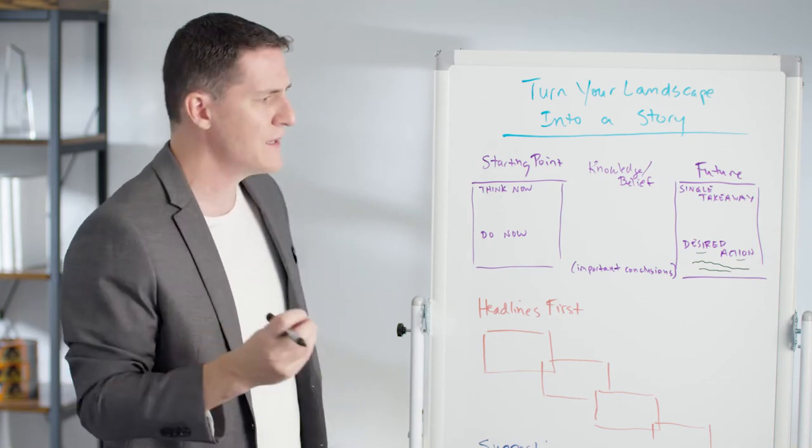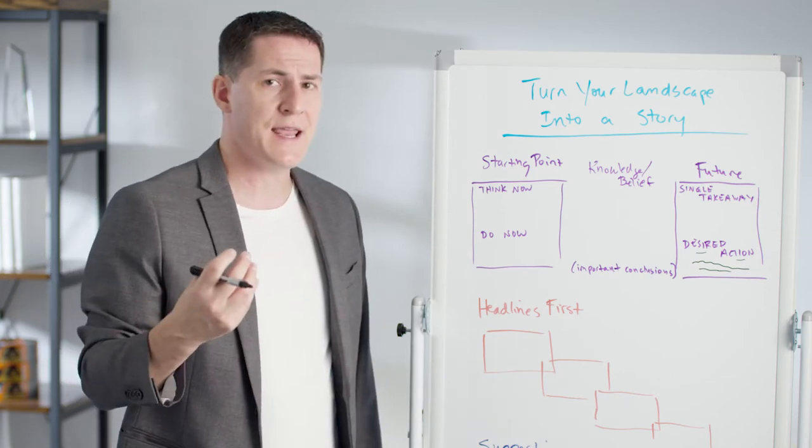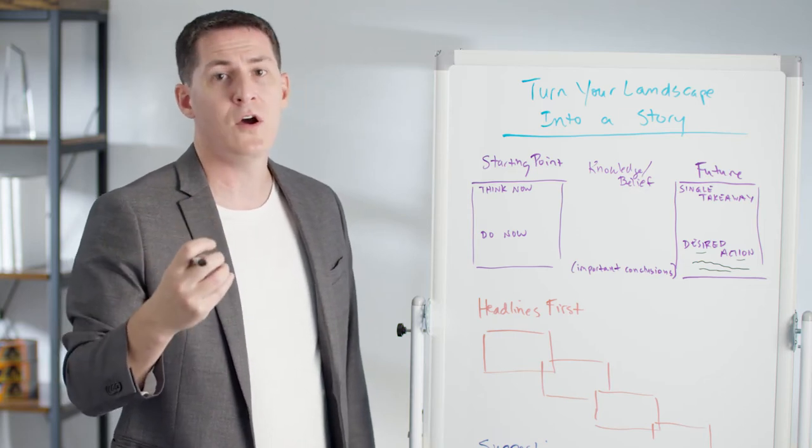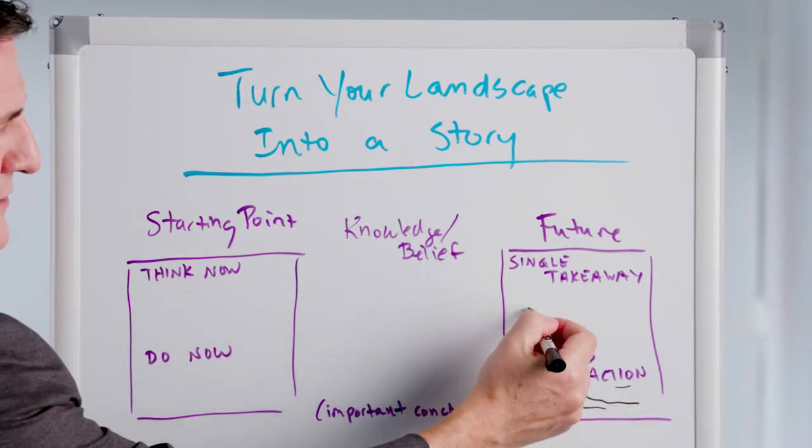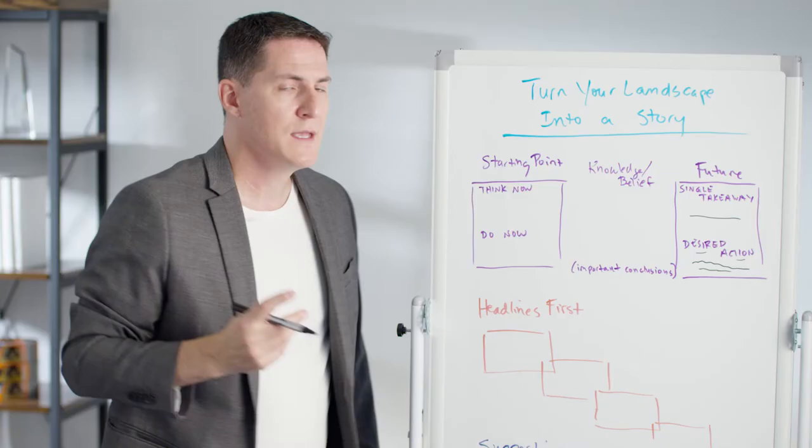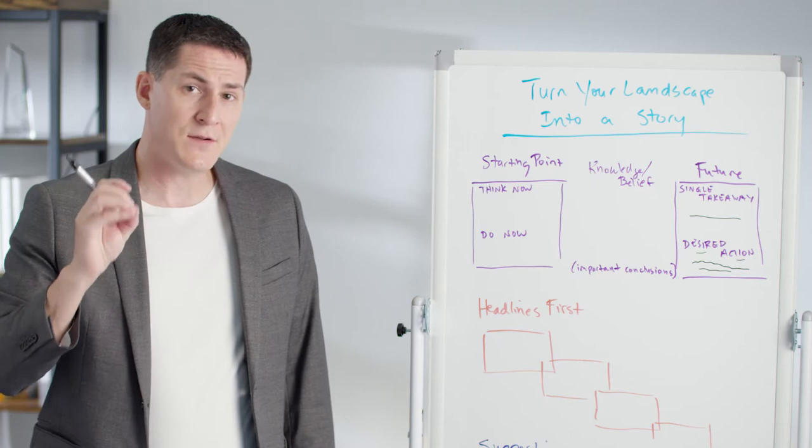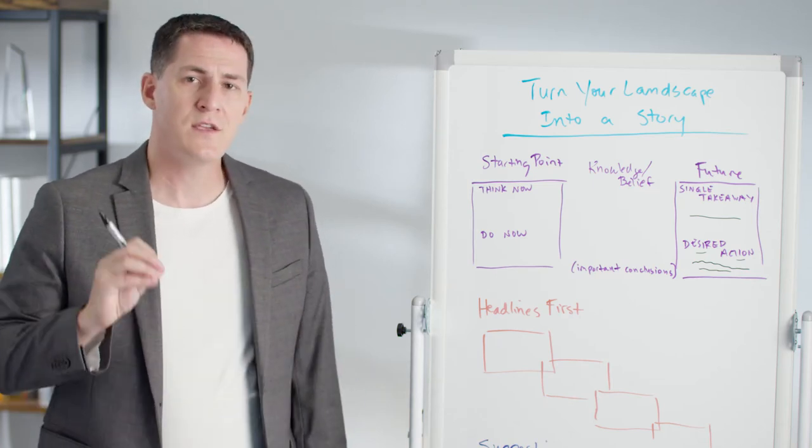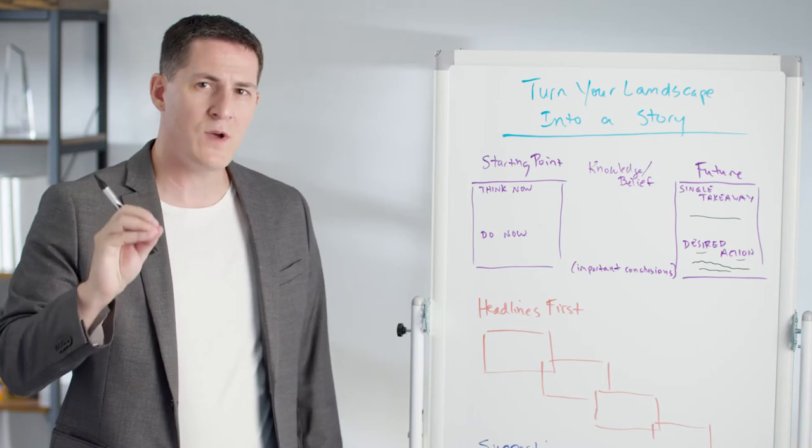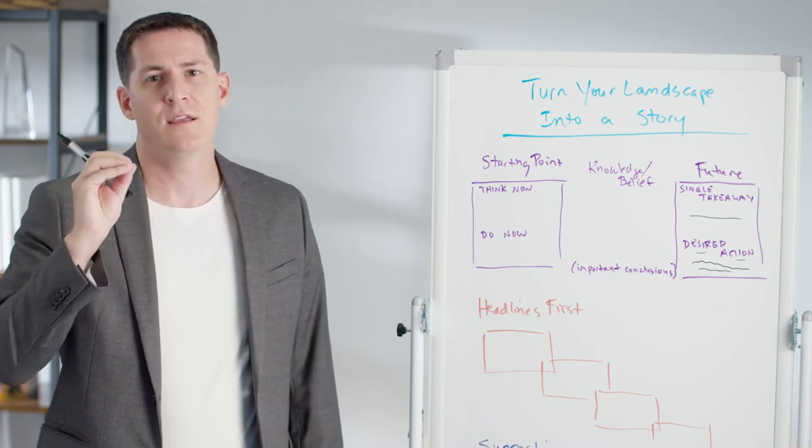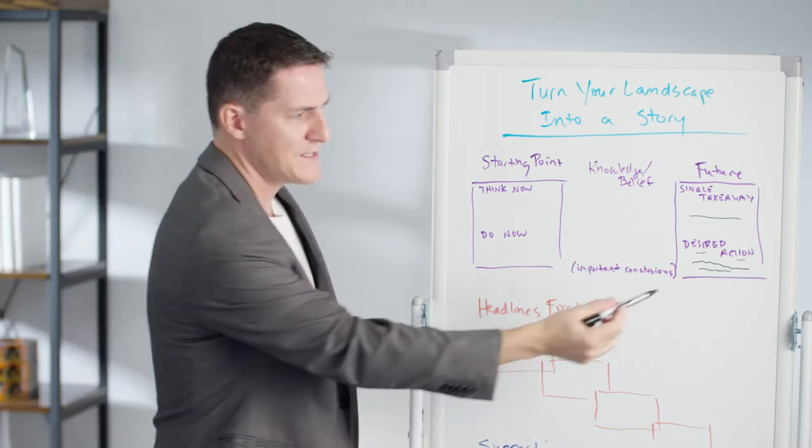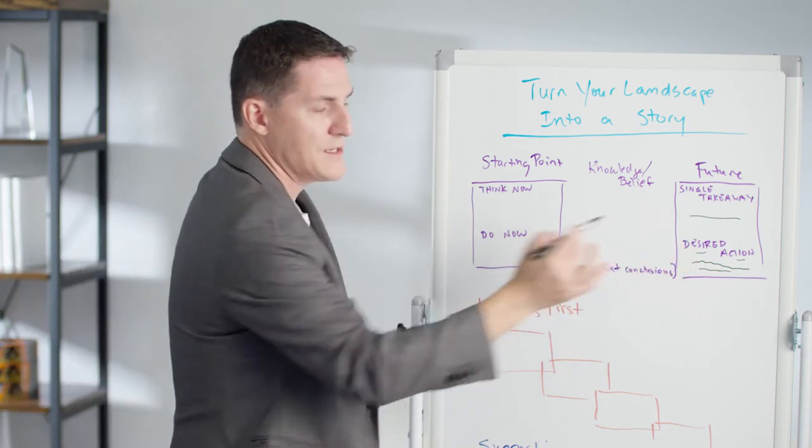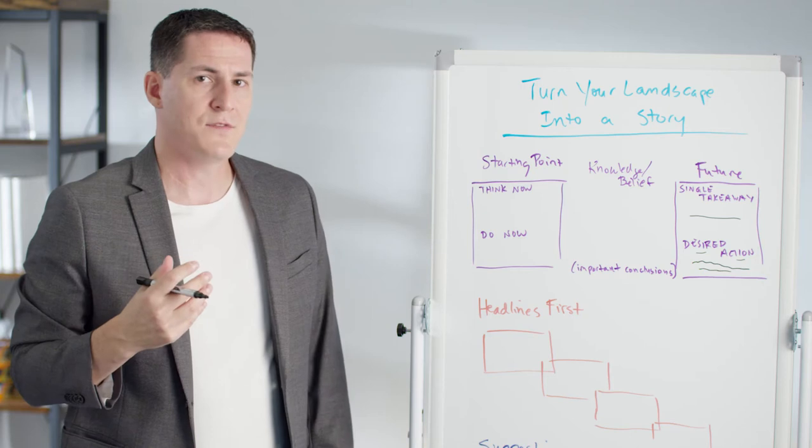Now you have to think a little bit. If the audience is going to take that action, now what's the one thing I need them to think, believe, or know once they leave the room? And that's what you're going to put here as your single takeaway. This needs to be simple, and there only needs to be one of these. You don't want multiple single takeaways. So when someone walks out of the room, what's the one thing they have to be thinking in their mind or believe in order to take this desired action?